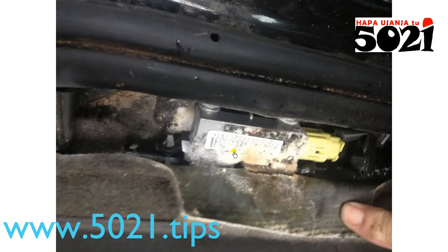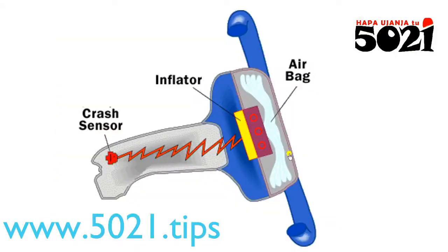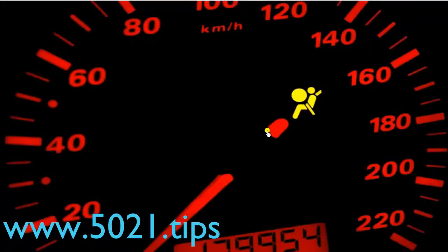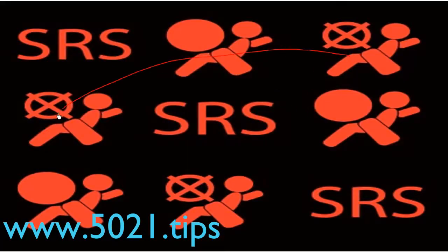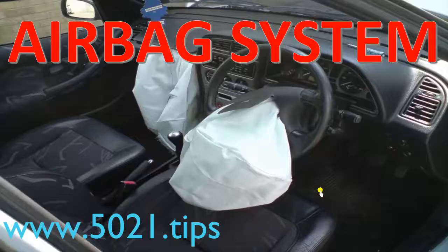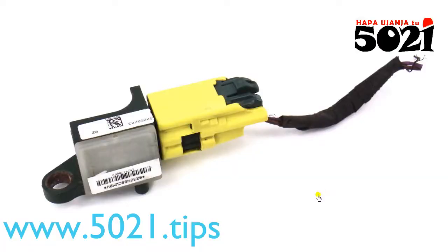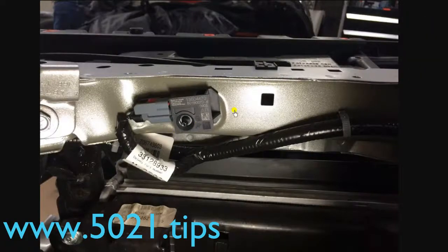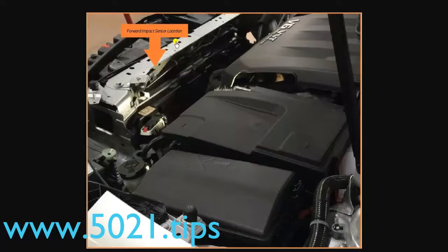This one is a switch, and when the crash happens the switch closes and the circuit completes, sending the signal. That is how the work happens. So basically, that is how the whole airbag thing works. You've seen the airbag system — the crash sensor acts as a switch, and when impact happens it triggers the control box. This is how impact sensors work.